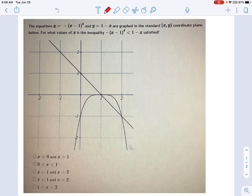So we're told there are two equations here. One of the equations is y equals negative (x minus 1) to the fourth power, and the other equation is y equals 1 minus x.